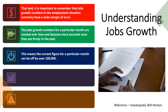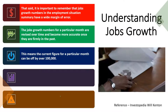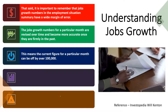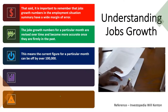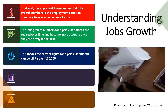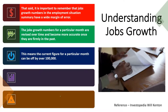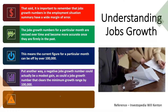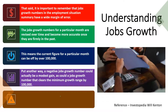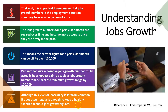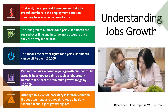If you go a little bit further back in the data, you're more likely to get numbers that are more secure. If you're looking at the job health of a particular area, you want to look at the trends over time and see if you have a positive or negative trend in jobs growth in the industries you think are going to be healthy. The current figure for a particular month can be off by over 100,000 — a negative jobs growth number could actually be a modest gain. Although this level of inaccuracy is far from common, it does occur regularly enough to keep healthy skepticism.